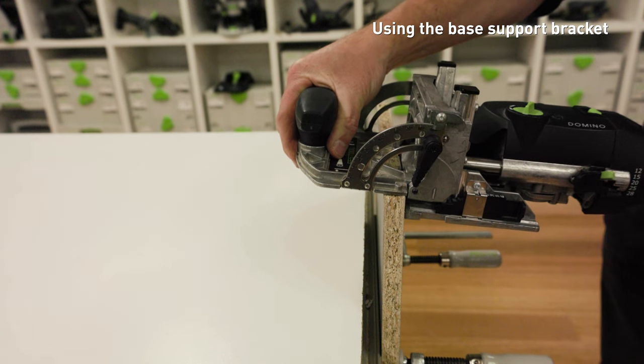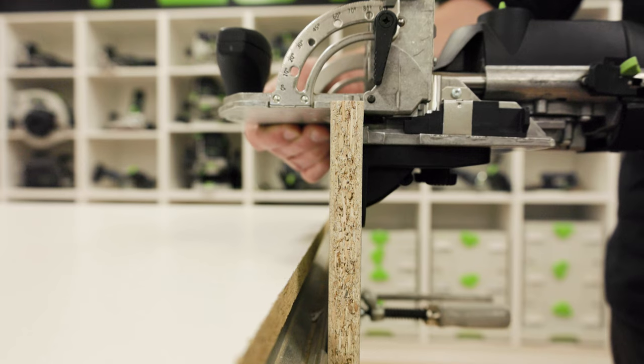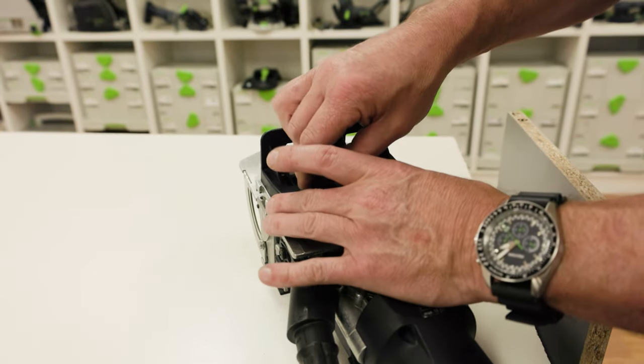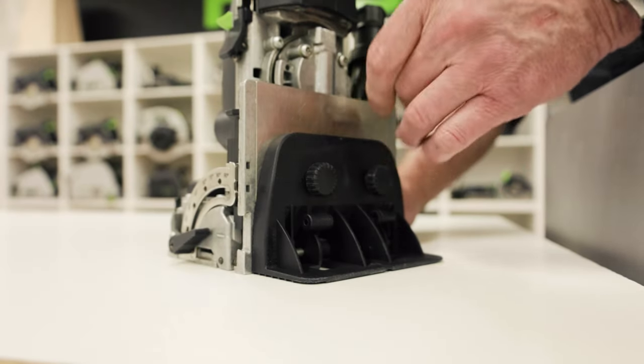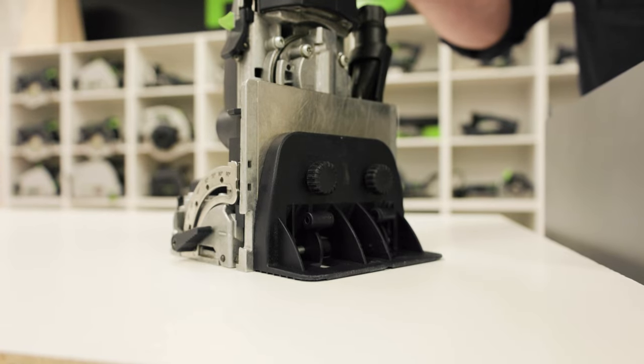The base support brackets stabilise the joiner when cutting in certain situations where there is minimal main table support. The base support bracket mounts to the underside of the joiner with two thumb screws. Before tightening the thumb screws, check to make sure the face of the support bracket is flush with the face of the joiner.